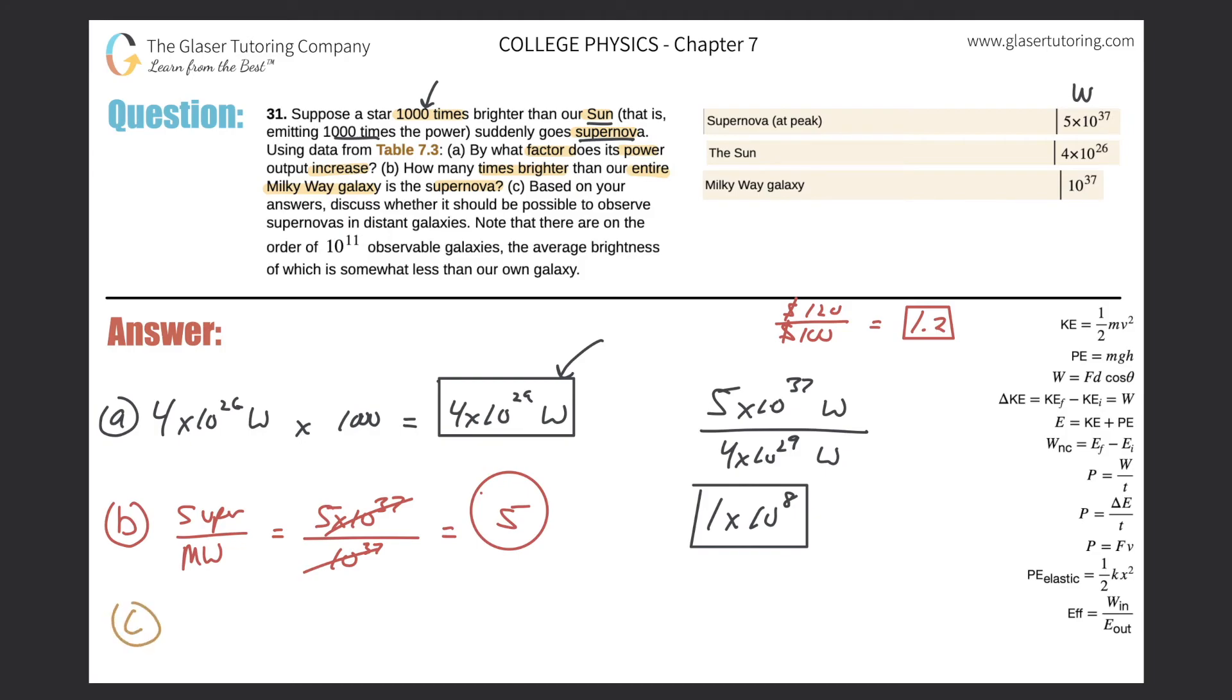So what's C asking? It says, based on your answers, discuss whether it should be possible to observe supernovas in distant galaxies. Note that there are on the order of 10 to the 11 observable galaxies, the average brightness of which is somewhat less than our own.